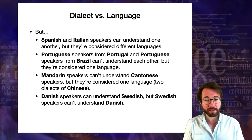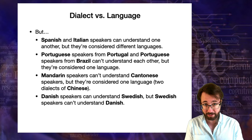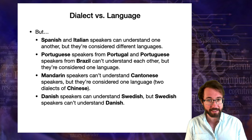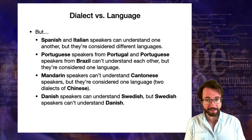Another example that makes it even more complicated: Danish speakers can understand Swedish — they can watch Swedish TV without subtitles — but Swedish speakers cannot understand Danish. So would you even say Danish and Swedish are mutually intelligible or mutually unintelligible? It's an asymmetrical relation.